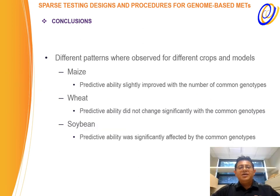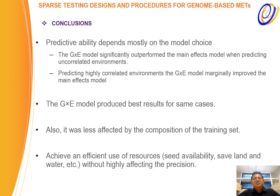In conclusion, we observed different patterns for different crops and models. For maize, predictability slightly improved with the number of common genotypes. With wheat, it did not change significantly. With soybean, it was significantly affected by the common number of genotypes. Overall, predictability depends mostly on the model choice, with the G×E model outperforming the main effect models. The G×E model produced the best results for the same training set size and composition, and was also less affected by the composition of the training set. This achieves an efficient use of resources — seed availability, water, and land — without affecting the precision of the prediction.